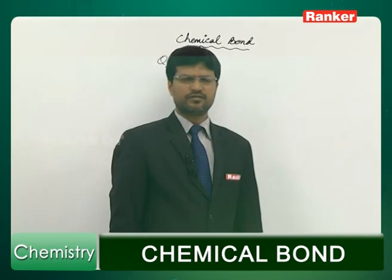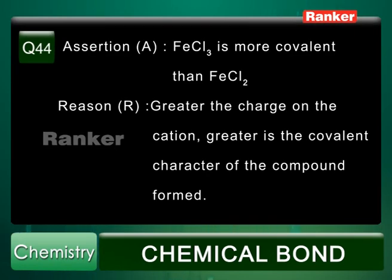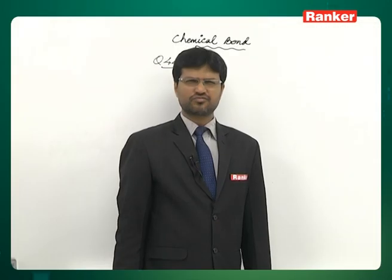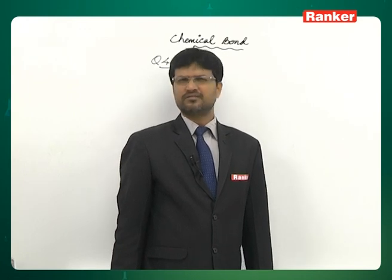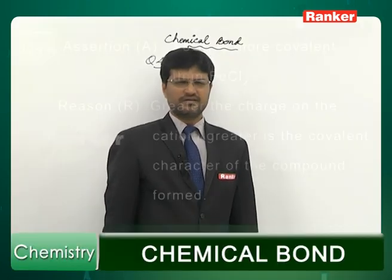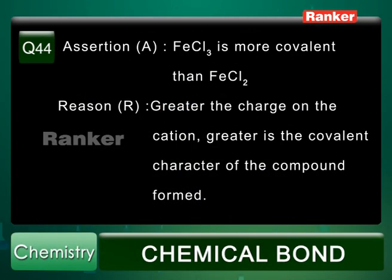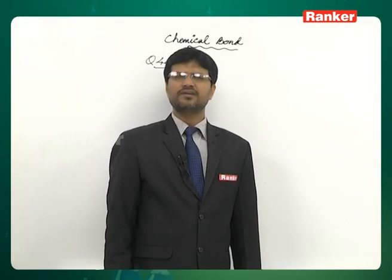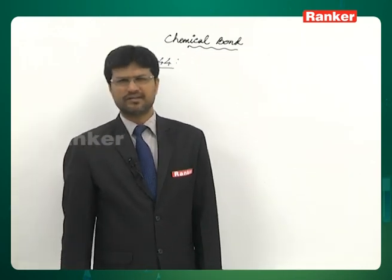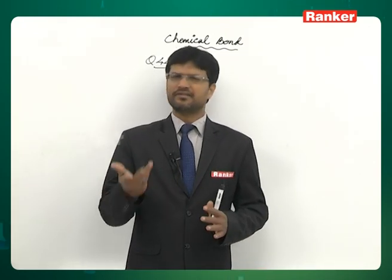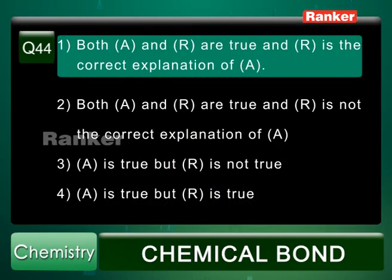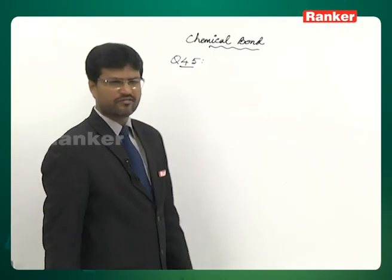Question number 44: Assertion — FeCl3 is more covalent than FeCl2. This is true. As the charge on the cation increases, its polarizing power increases and therefore covalent nature increases — according to Fajan's rules. Fe3+ has greater polarizing power than Fe2+. Answer is first option.